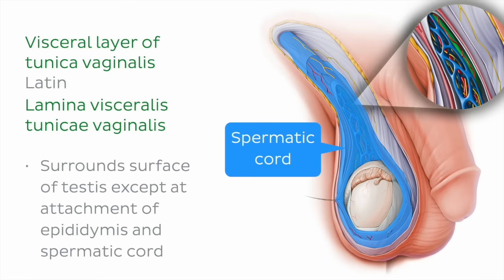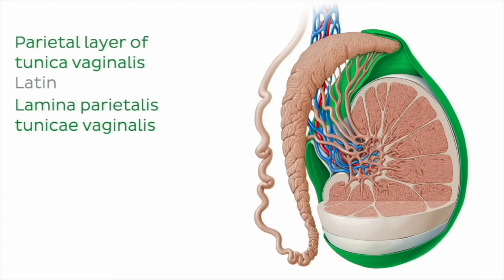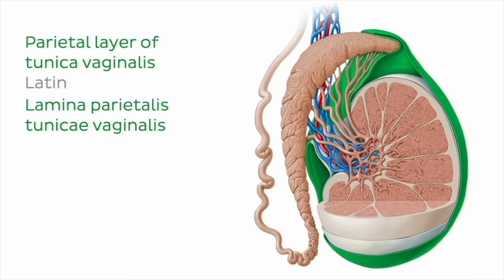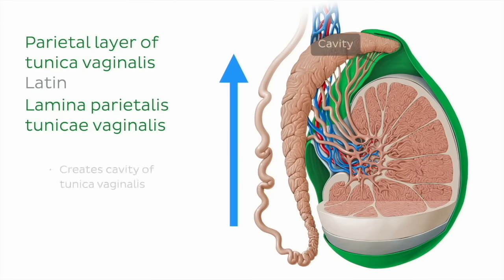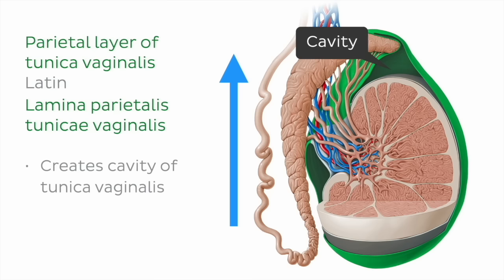The tunica vaginalis surrounds the surface of the testes except at the attachment point of the epididymis and spermatic cord. The parietal layer of the tunica vaginalis is the moist external layer, which is looser and extends in a superior direction, creating a cavity between the visceral and parietal layers. The fluid within this cavity allows the testes to move freely within the scrotum. The tunica vaginalis also extends to encase the other internal reproductive organs.